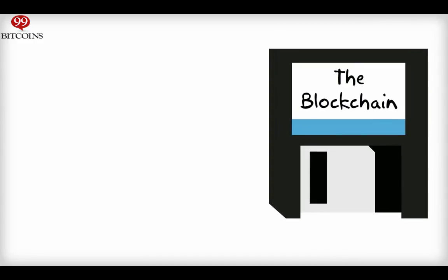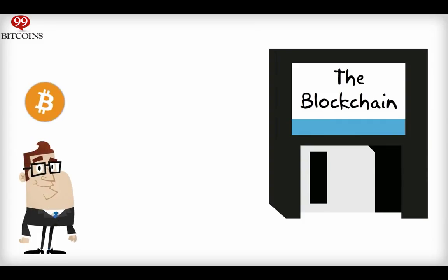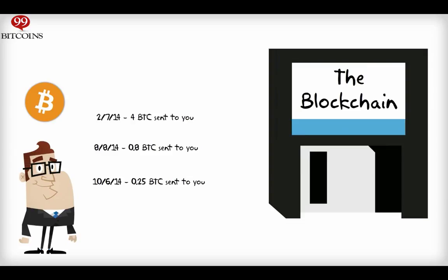The blockchain is a big file that keeps track of all bitcoin transactions ever made. So if you own some bitcoins, all it means is that the blockchain has references to transactions that were made to your bitcoin address. The term for these references is inputs.